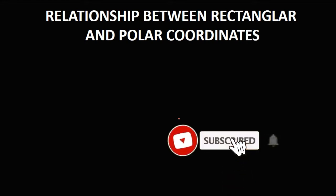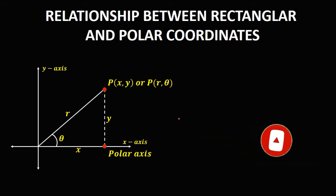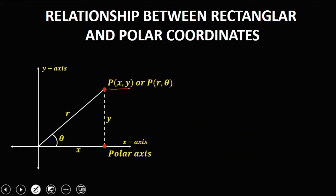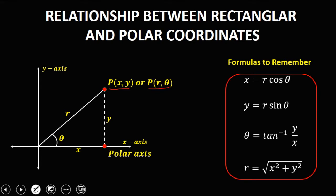The relationship between rectangular and polar coordinates. We have a figure where point (x, y) represents rectangular coordinates and point (r, θ) represents polar coordinates. The key formulas are: x = r·cos(θ), y = r·sin(θ), θ = arctan(y/x), and r = √(x² + y²).